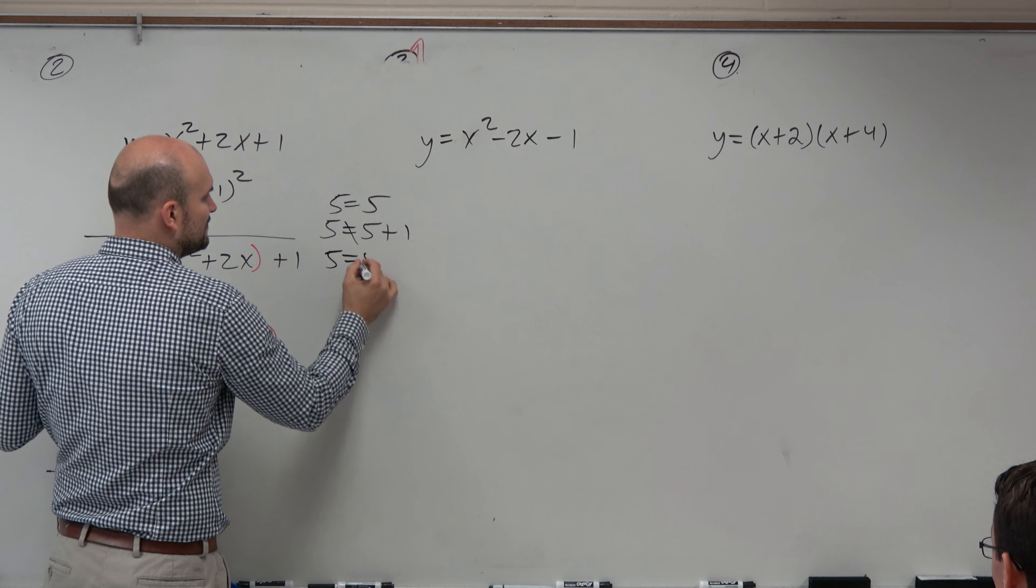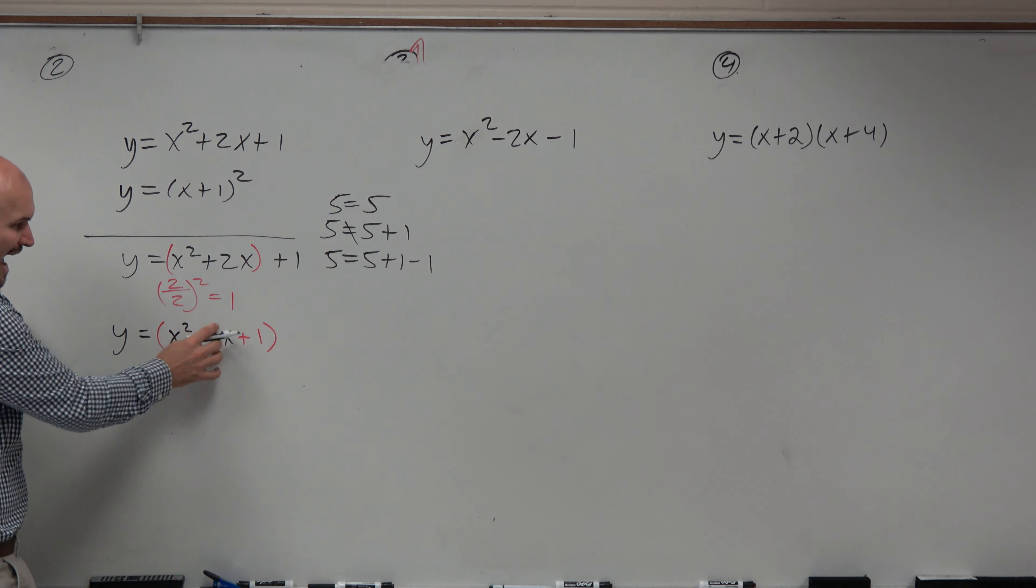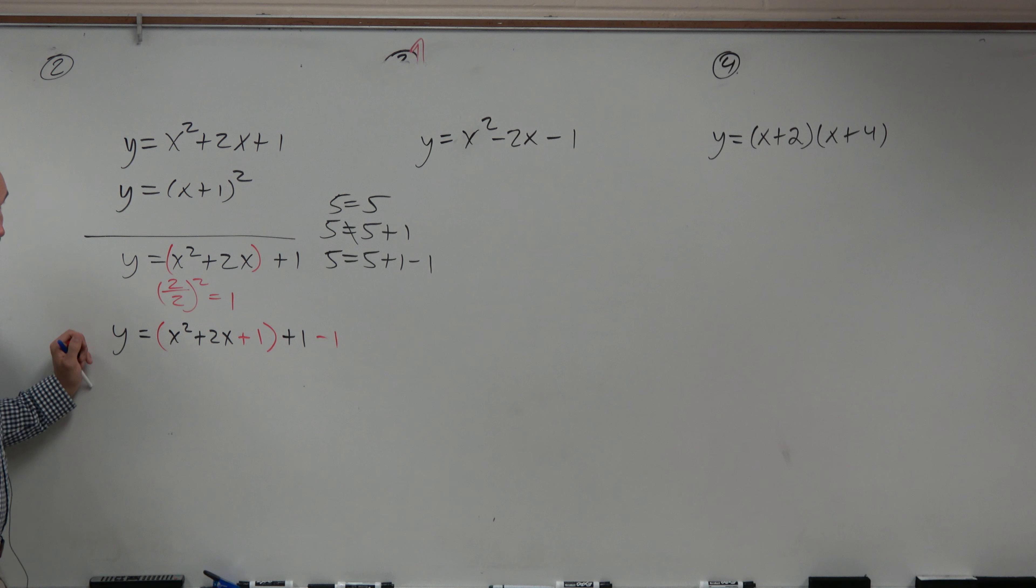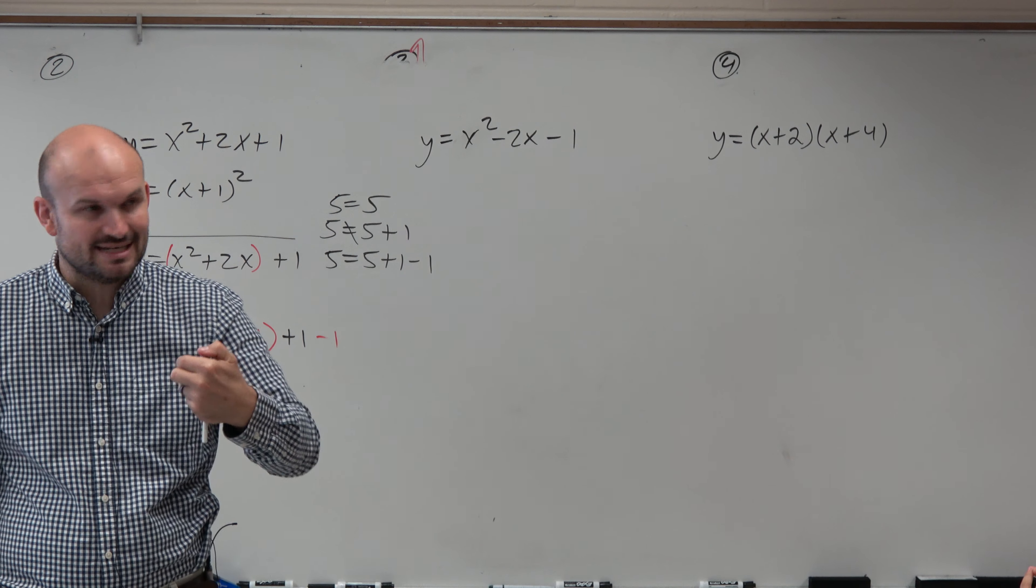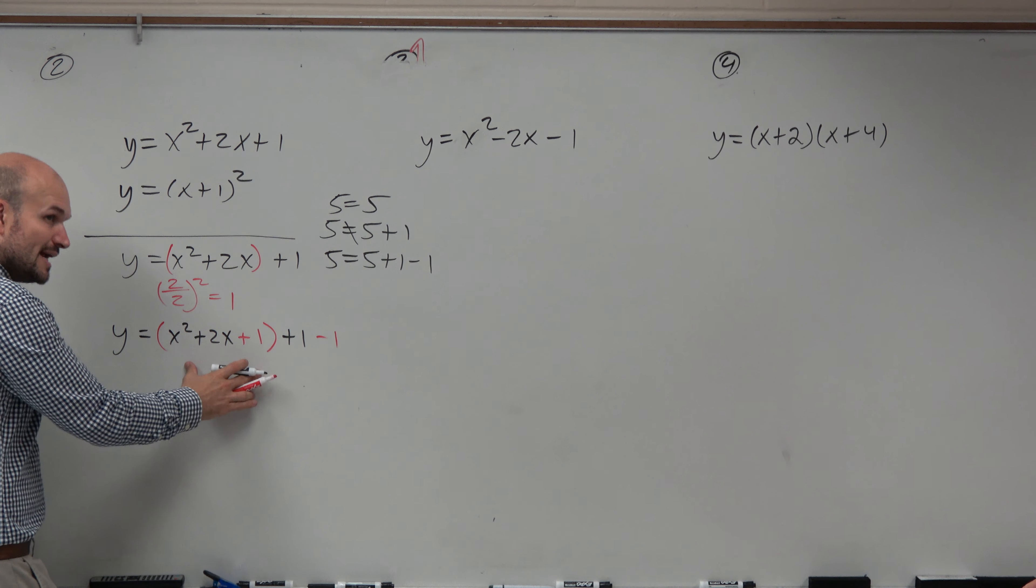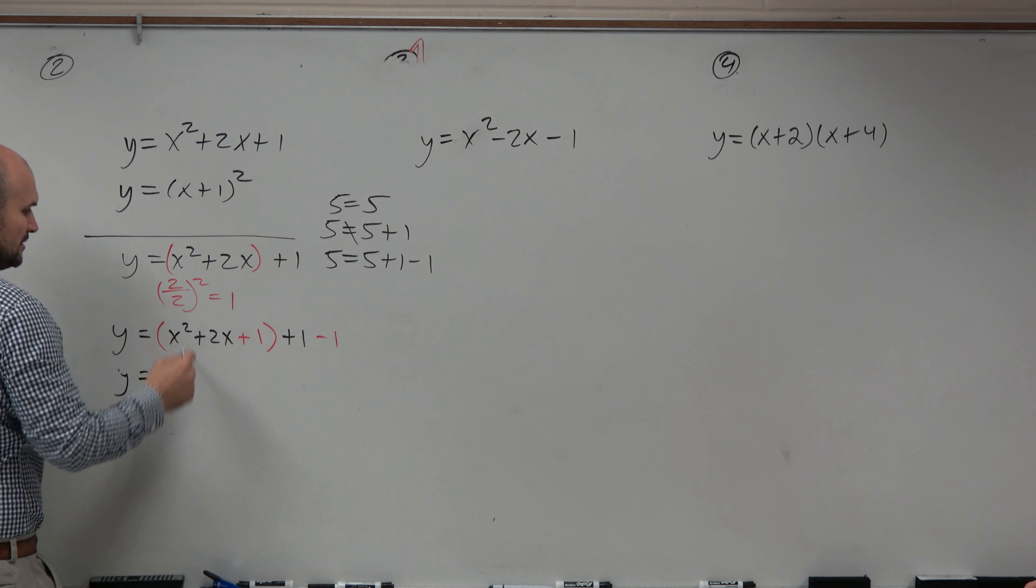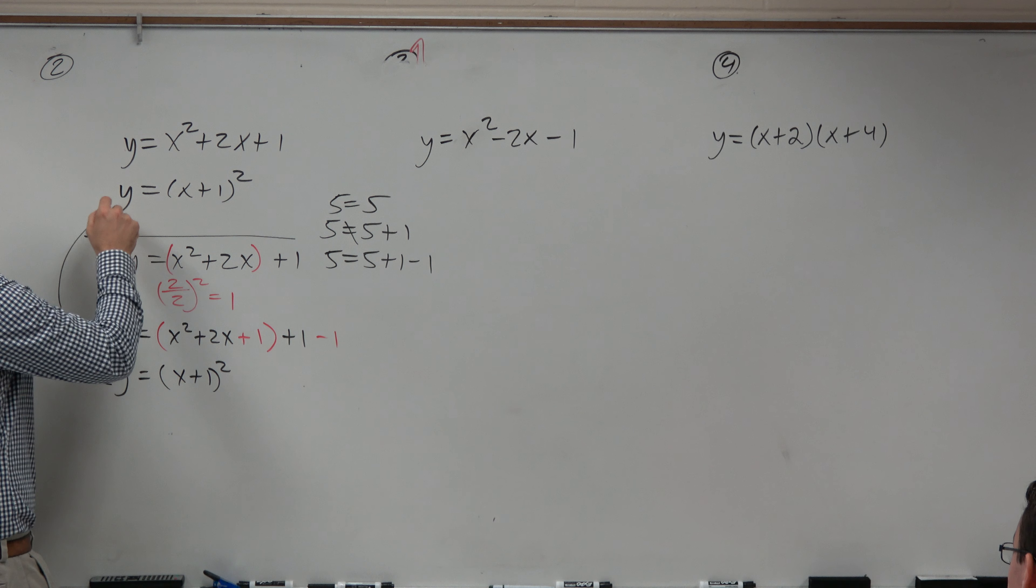But if I say 5 is equal to 5 plus 1 minus 1, you'd say that's correct again. Agreed? So if you add a 1, you also have to subtract the 1. Now, the only reason why I'm going through this problem, because you're really not going to see many of these, is when you create this parentheses, you just created a perfect square trinomial every single time. So it's always going to be factorable. And we already knew it was factorable to x plus 1 squared. 1 minus 1 is 0, and that's why you got the exact same answer.